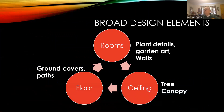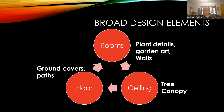We're going to begin with some broad design elements. We call these the floor, the ceiling, and the rooms. If you go to any kind of formal seminar on gardening, people will probably talk about these things specifically — the floor of the garden, the rooms of the garden, the ceiling of the garden — just as if we were considering the interior of our homes. The floor consists of ground covers and paths; the ceiling is the tree canopy; and the rooms include plant details, garden art, walls, and so on.